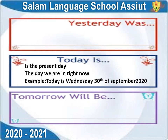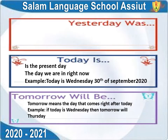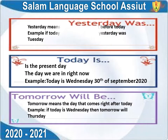Today is the present day, the day we are in right now. Tomorrow means the day that comes right after today. Yesterday means the day that comes right before today.